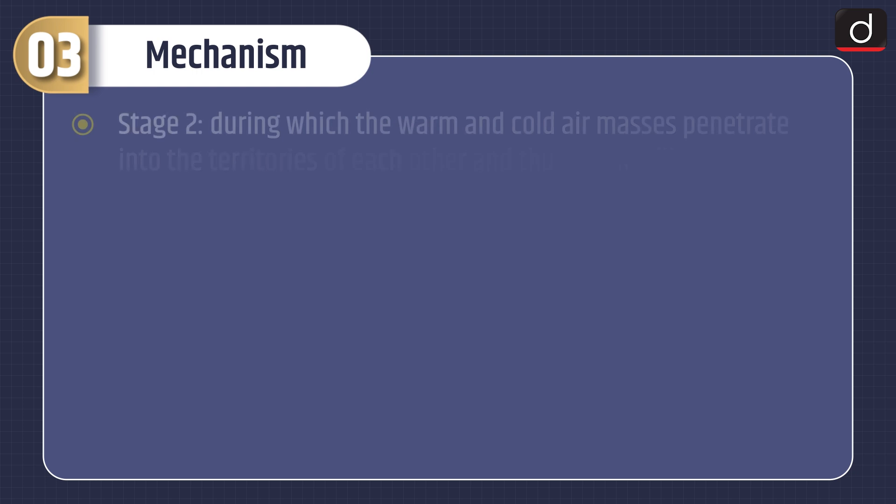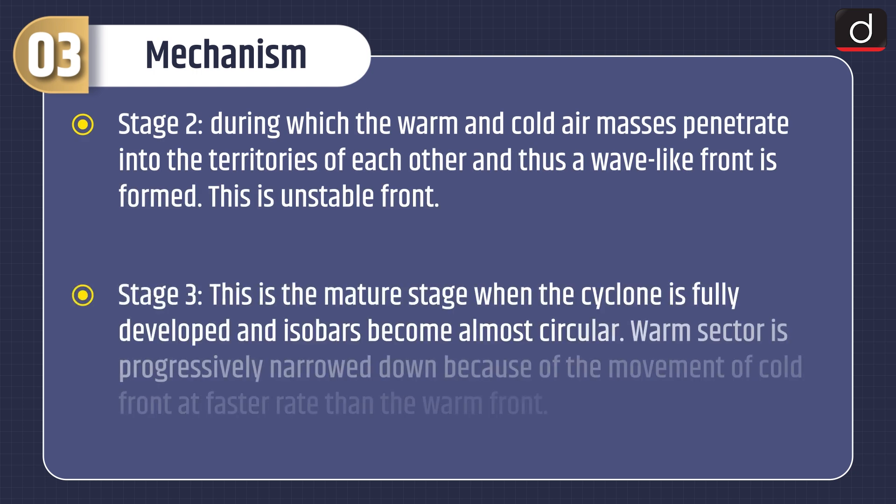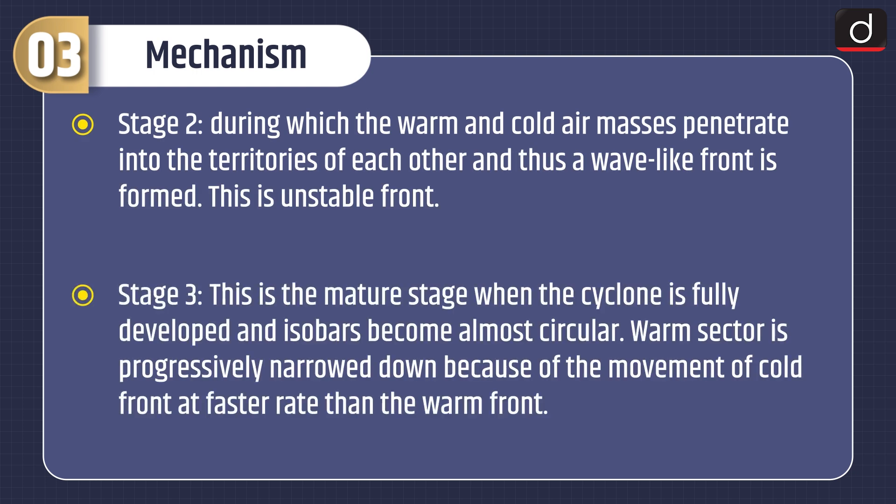Stage two: the warm and cold air masses penetrate into the territories of each other, and thus a wave-like front is formed. This is an unstable front. Stage three is the mature stage, when the cyclone is fully developed and isobars become almost circular. The warm sector is progressively narrowed down because of the movement of the cold front at a faster rate than the warm front.